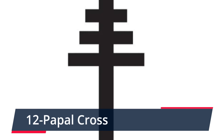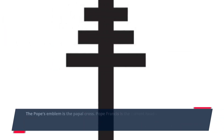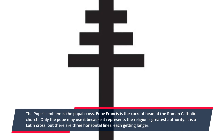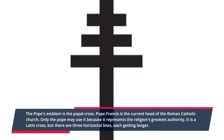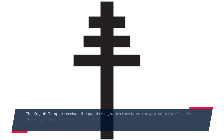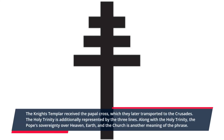Number twelve: the Papal Cross. The Papal Cross is the pope's emblem; Pope Francis is the current head of the Roman Catholic Church. Only the pope may use it, as it represents the religion's greatest authority. It resembles a Latin cross but has three horizontal lines, each getting longer. The Knights Templar received the Papal Cross and later transported it to the Crusades. The three lines represent the Holy Trinity as well as the pope's sovereignty over heaven, earth, and purgatory.